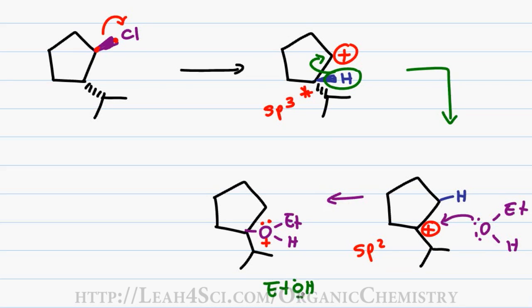Another solvent molecule in solution will be attracted to that partially positive hydrogen, break it away from the oxygen and give oxygen back the electrons. This gives me the final neutral product.